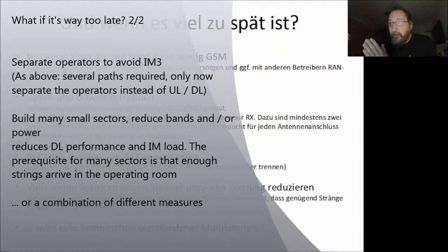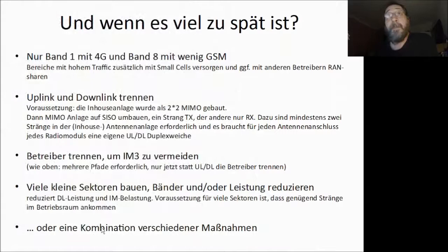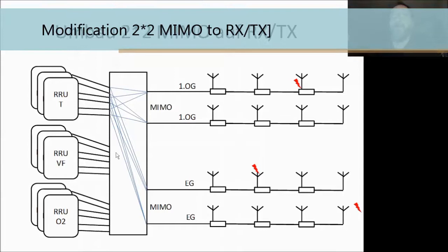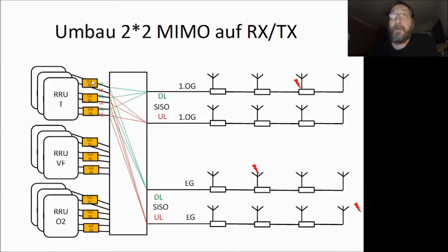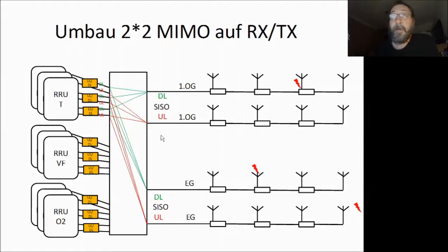For in-house systems: if you add uplink/downlink filters on each connector of every radio unit, you can split the downlink signal to one antenna line and the uplink signal to the other line in the floor. You can also do this for different providers on the two antenna lines.